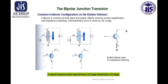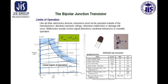Now, limits of operation. Like all other electronic devices, transistors must not be operated outside the manufacturer's absolute maximum ratings; otherwise, malfunction or damage will occur. Malfunction usually involves signal distortion or unstable operation.